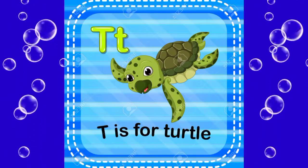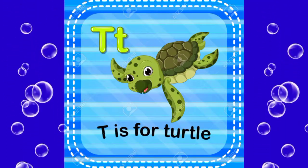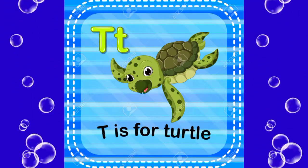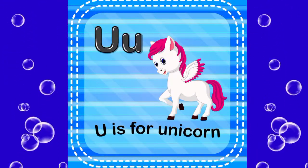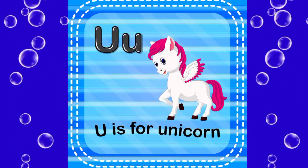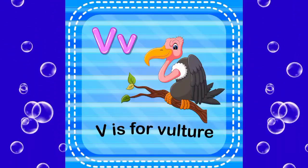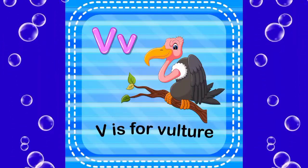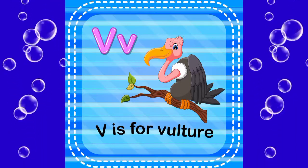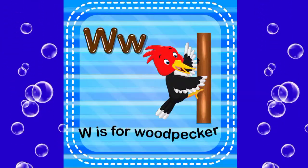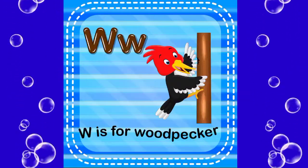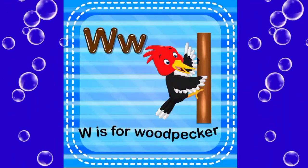T is for tortoise, U is for unicorn, D is for wonger, W is for woodpeaker.